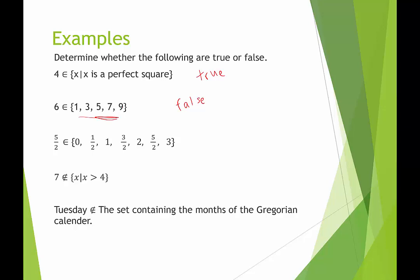The third one, 5 halves, is an element of this set. And this would be true, because it lists all the elements of the set, and I see 5 halves is right there.